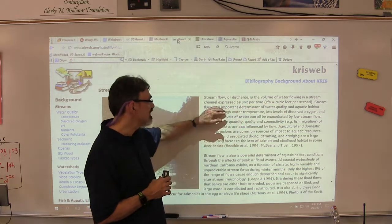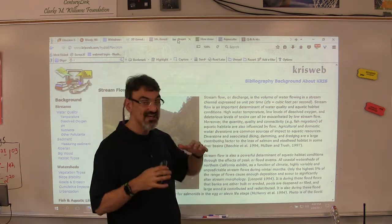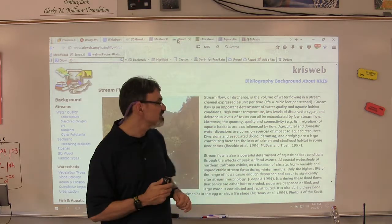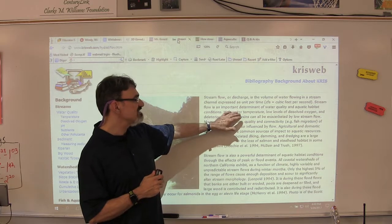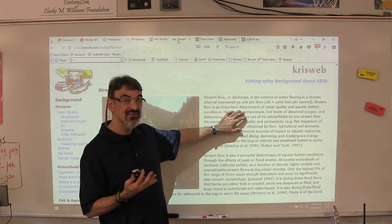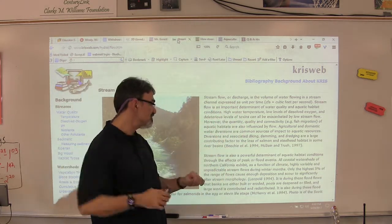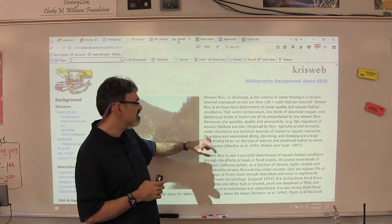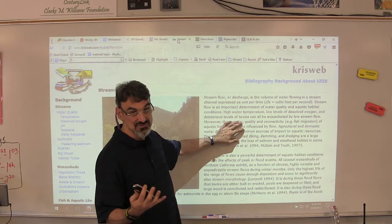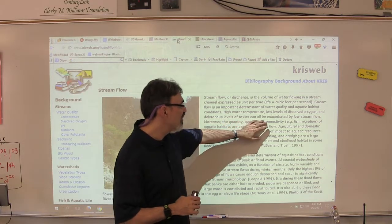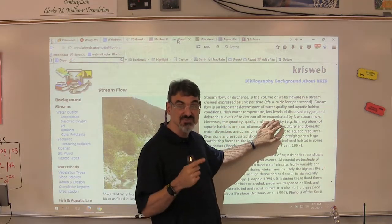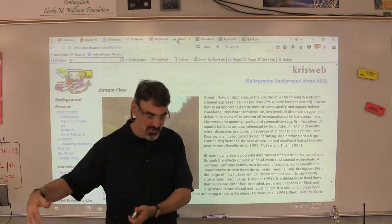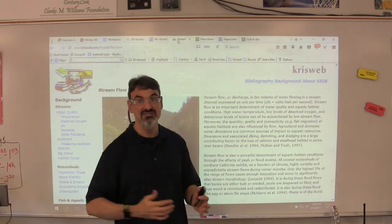Stream flow or discharge is the volume of water flowing in a stream channel, expressed as a unit per time. They use cubic feet per second; we did gallons per second. It's an important determinant of water quality and aquatic habitat. High water temperature and low dissolved oxygen levels of toxic pollution can all be made worse by low stream flow.